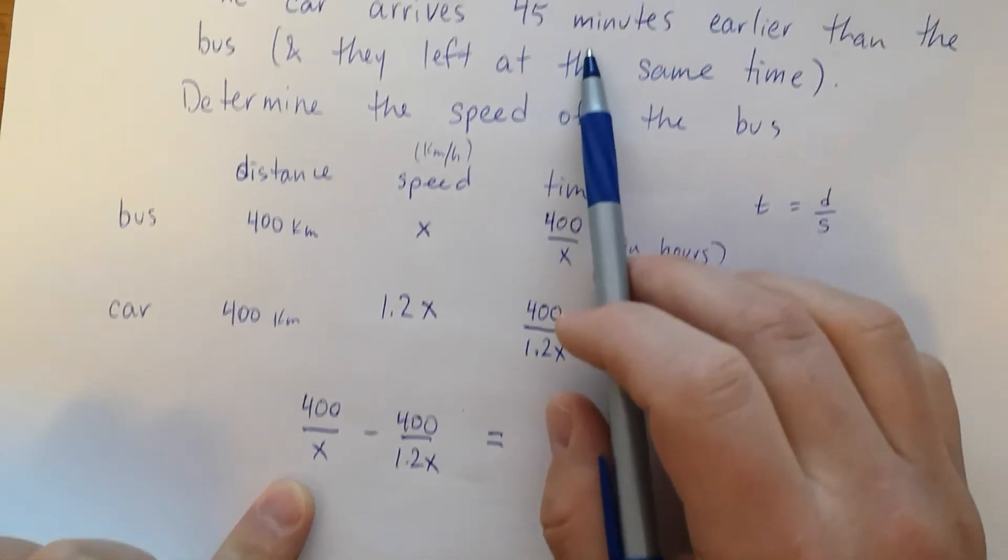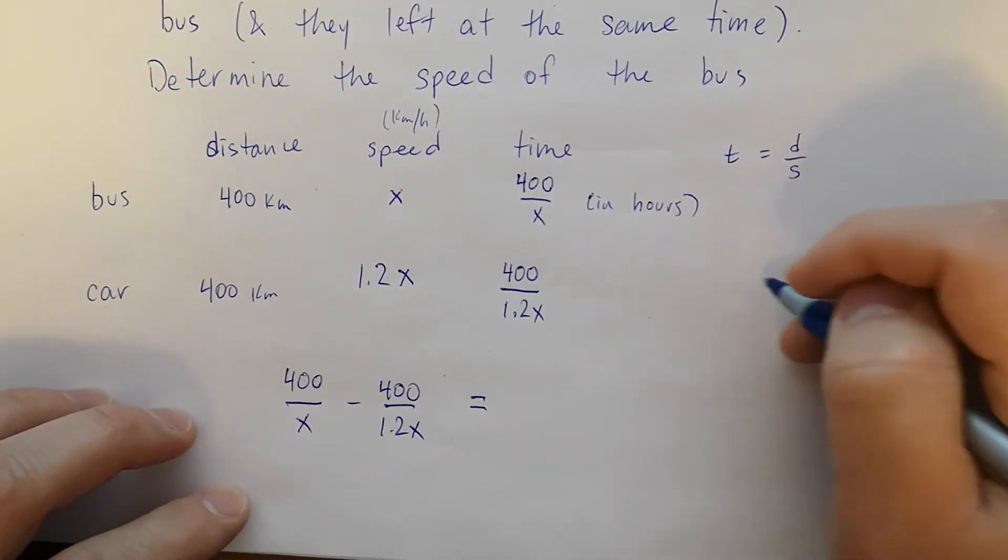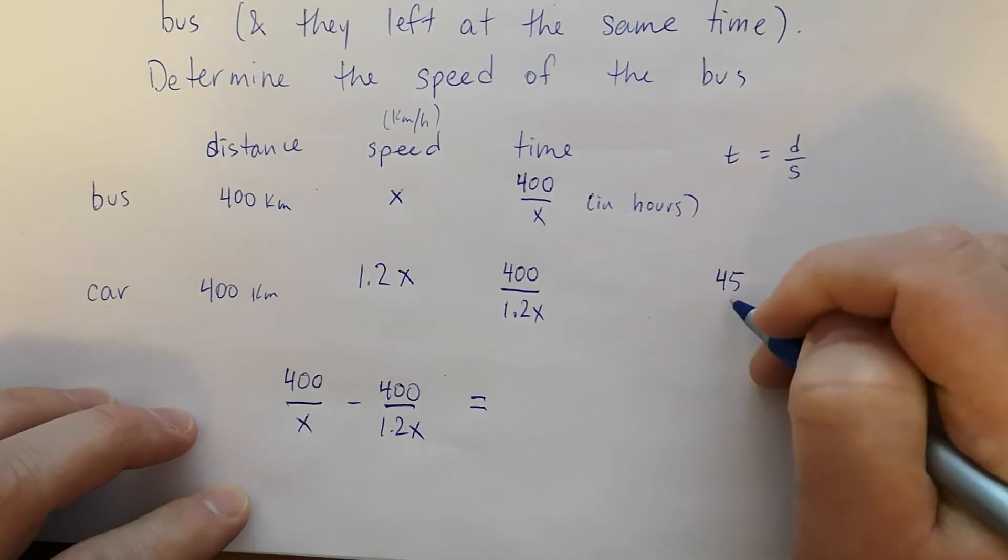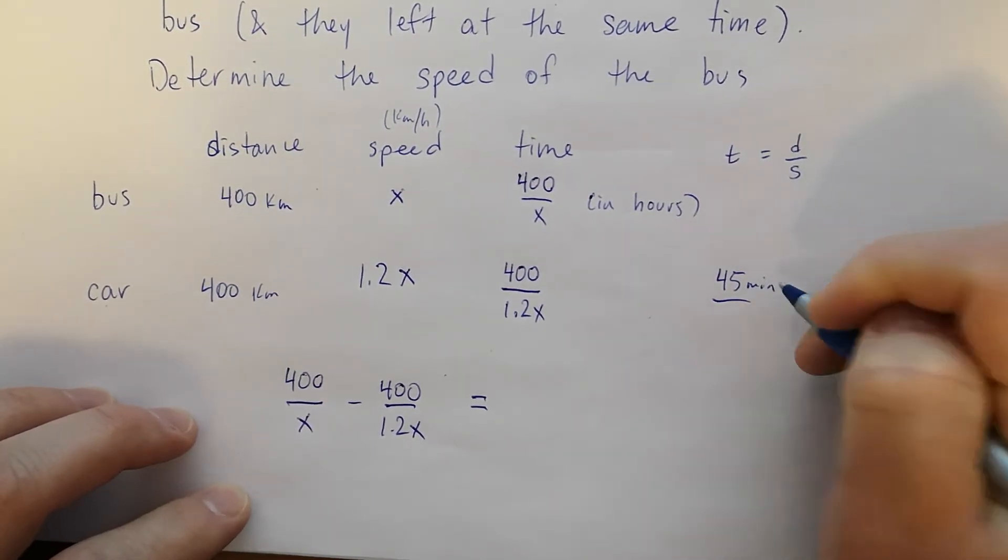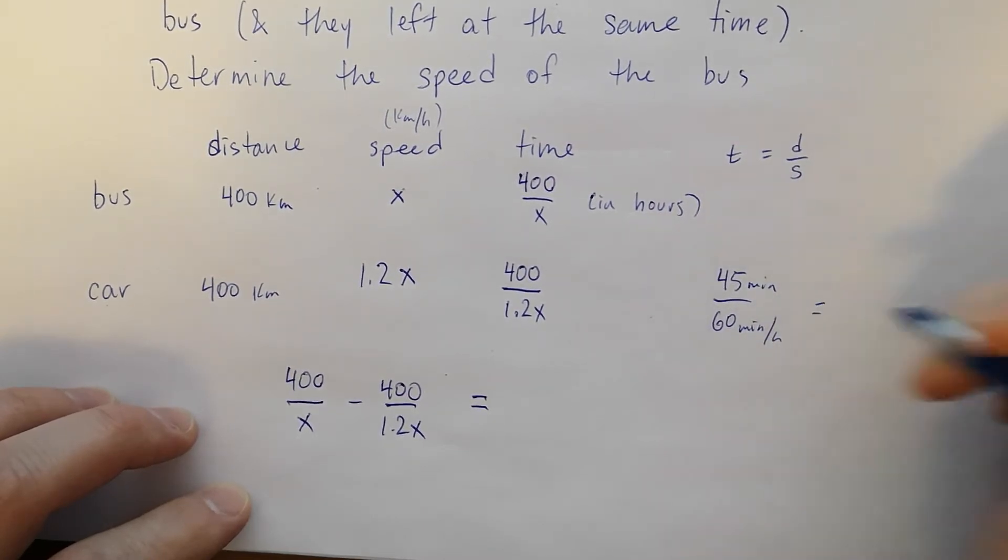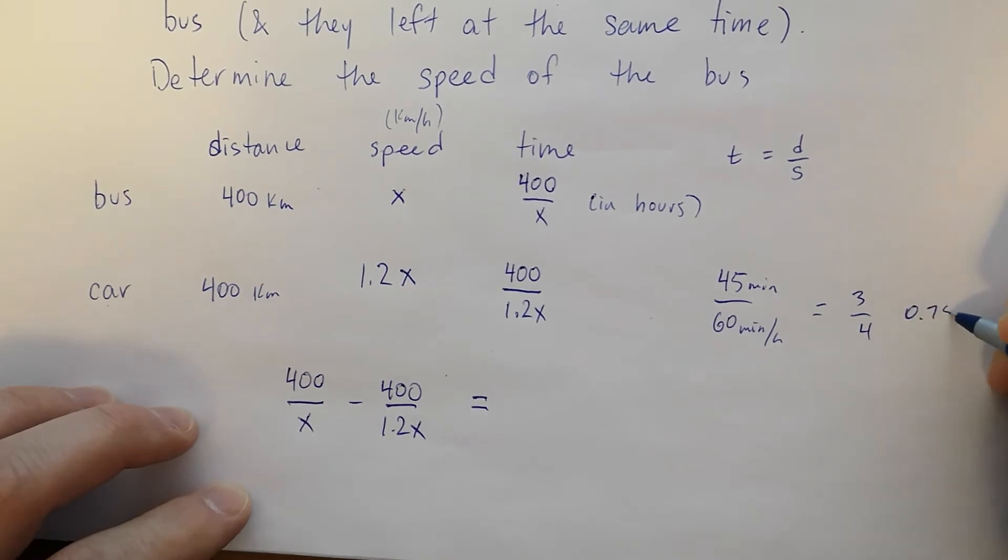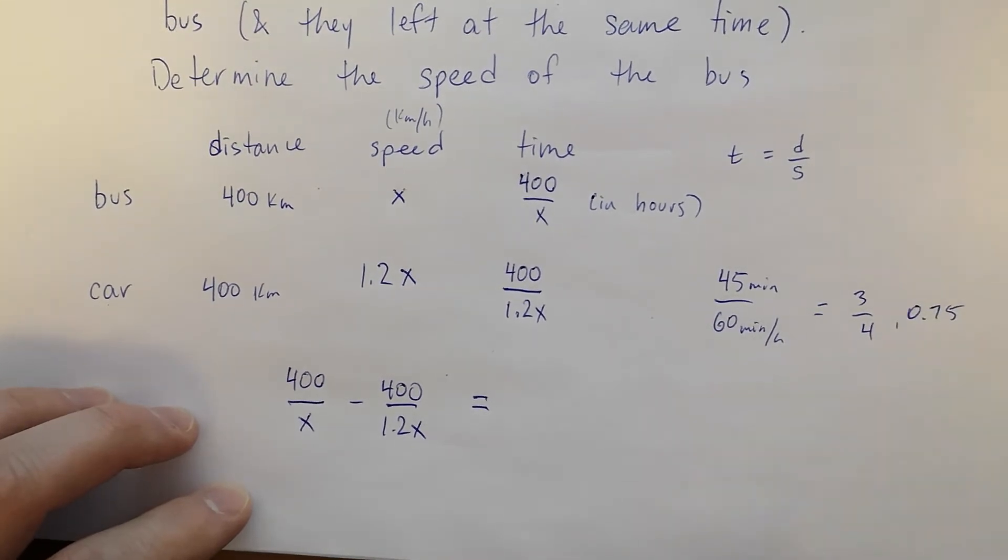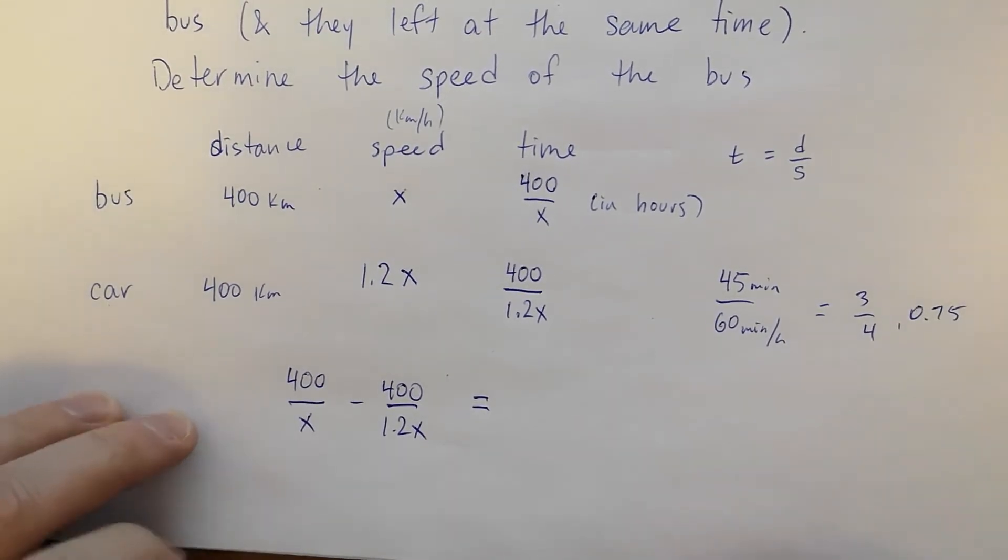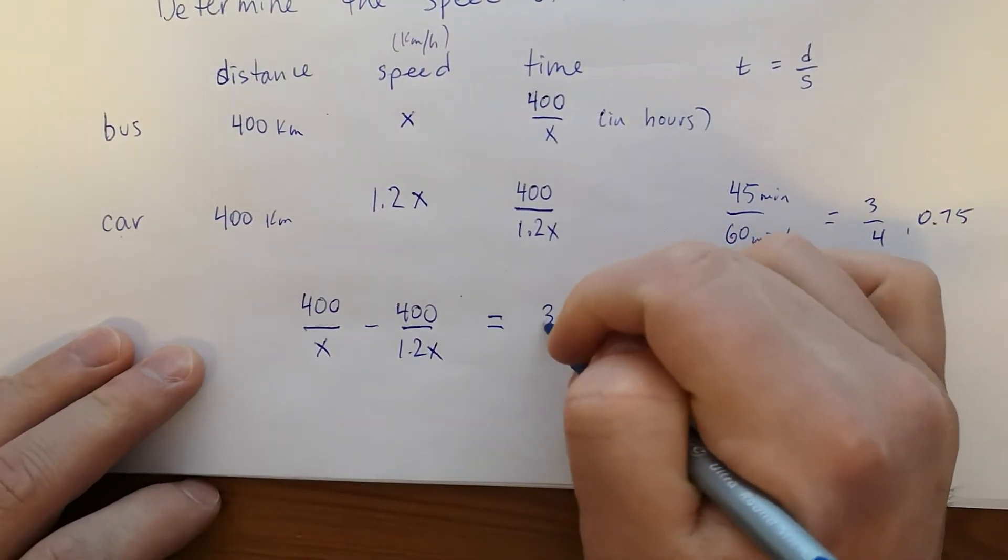So what we have to do is put this 45 minutes into hours. You probably know what it is off the top of your head, but I'll just show you the math that you can do if you don't. 45 minutes divided by how many minutes there are in an hour, which is 60. That's going to be 3 quarters or 0.75, whichever one you prefer. Maybe I'll call it 3 quarters for now.